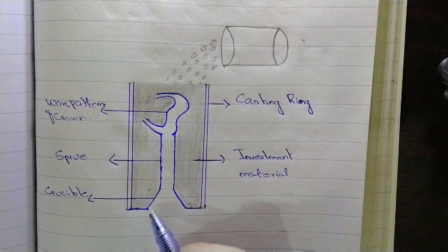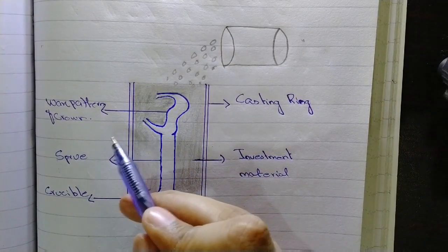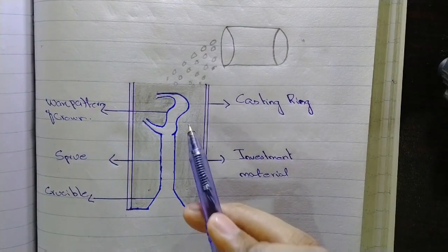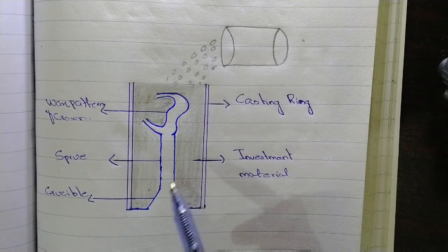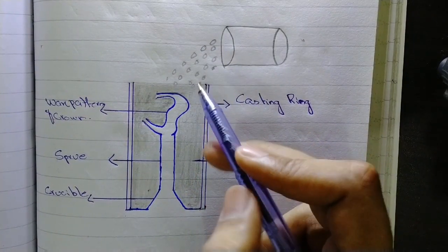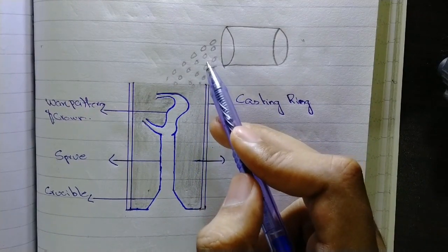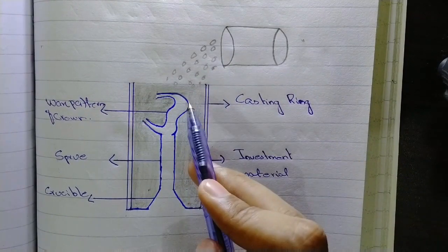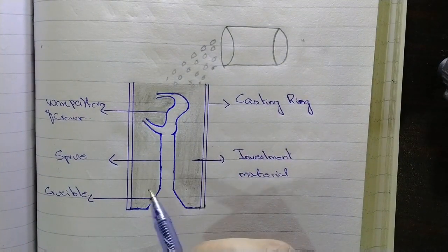This here is the crucible - the container where molten alloy lies. This is the wax pattern. Let's suppose this casting ring is empty, there is no investment material in it yet. Now we are pouring the investment material in this casting ring, which is still in liquid form, so that the casting ring will be fully filled.